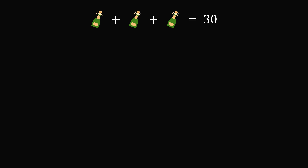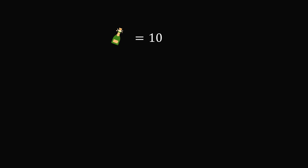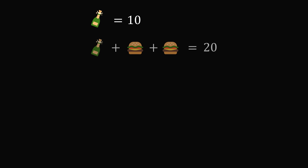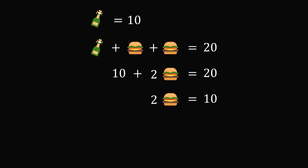Let's get started on these equations. We have 3 bottles is equal to 30, and that means each bottle is equal to 10. Now let's use this value for the next equation. Bottle plus 2 burgers is equal to 20, so we have 10 plus 2 burgers is equal to 20. That means 2 burgers is equal to 10, and 1 burger is equal to 5.